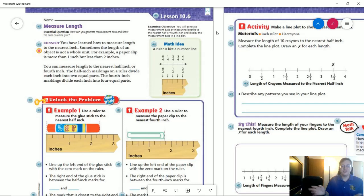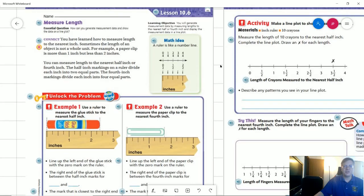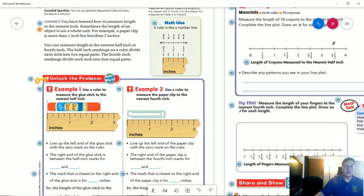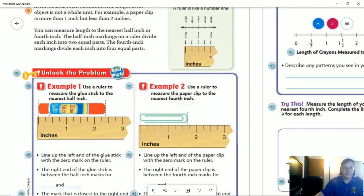So let's go ahead and look at our examples. So for the unlock the problem, they gave two different things. We are going to be talking about measuring to the nearest half inch as well as to the nearest quarter inch or fourth inch.